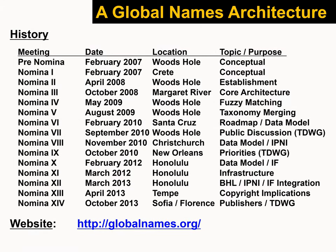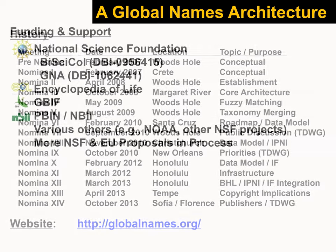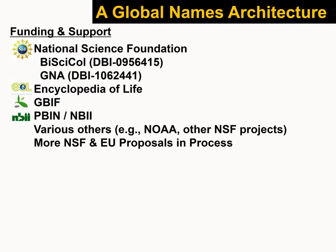A quick history: the idea, structure, and implementation of Global Names Architecture came about through a series of what we call Nomina meetings. They're ongoing — most recently a two-part one in October of last year, with more to come. James has been a part of most of them, as have I. Primary funding, at least the most recent, has come from the National Science Foundation through two separate awards: one for the BIScicle Project, and one for Global Names Architecture, a collaboration between Bishop Museum and the Biodiversity Heritage Library, led by Patty Patterson of Woods Hole, also including Cal Academy with Stan Bloom. Earlier funding came from Encyclopedia of Life, GBIF, and the now-defunct NBII.